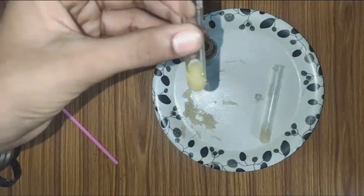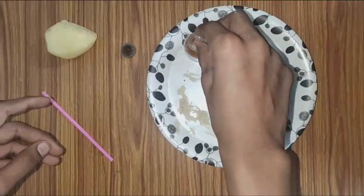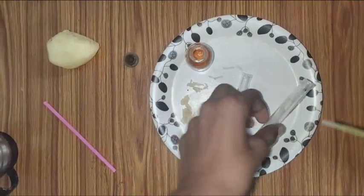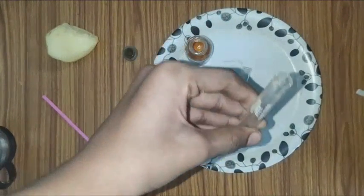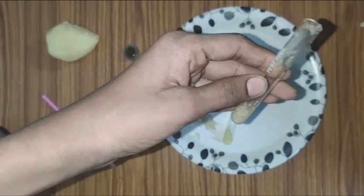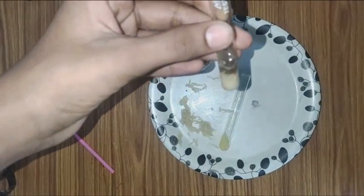Now, we have to do the same step with test tube one. First, we have to take a few drops of iodine with the help of the dropper and pour it inside test tube one which contains grated potato. I have completed.